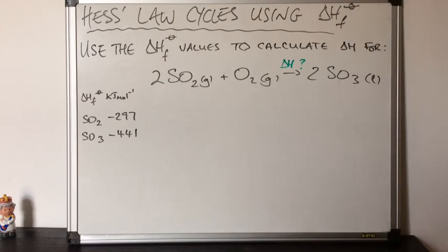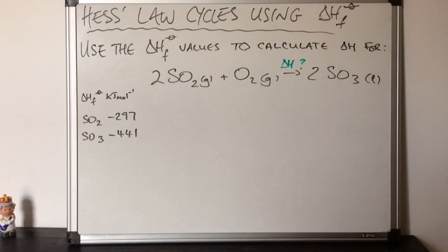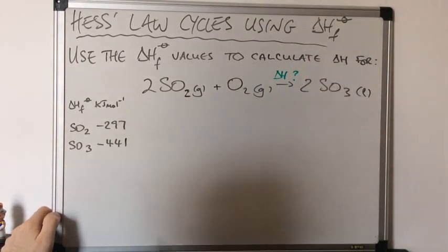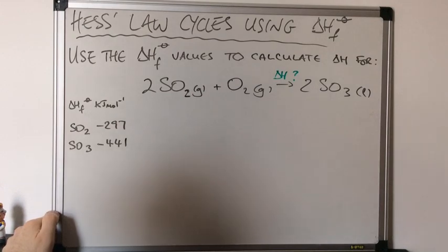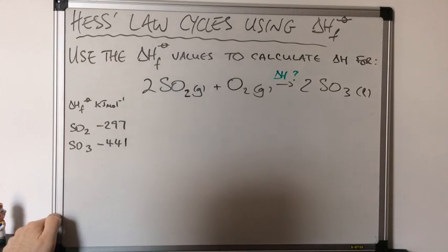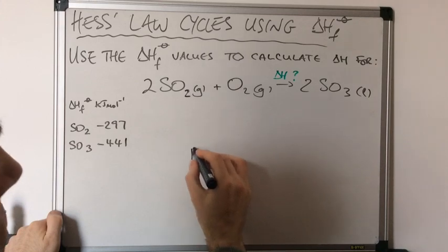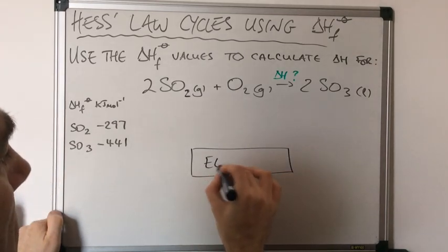We're going to use the enthalpy change of formation values to calculate the enthalpy change for the reaction between two moles of SO₂ gas and one mole of O₂ gas to form two moles of SO₃ liquid. Because these cycles are based on enthalpy changes of formation, the definition is: the enthalpy change when one mole of a substance is formed from its elements under standard conditions. I'm going to put a box here and write the word 'elements' in it.